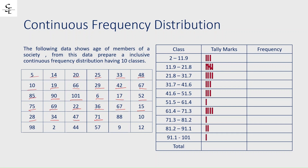Continuing: 71 falls in 61.4 to 71.3; 88 falls in 81.2 to 91.1; 10 falls in 2 to 11.9; 98 falls in 91.1 to 101; 2 falls in 2 to 11.9; 44 falls in 41.6 to 51.5; 57 falls in 51.5 to 61.4; 9 falls in 2 to 11.9; 12 falls in 11.9 to 21.8. Now let's count the tally marks for each class.